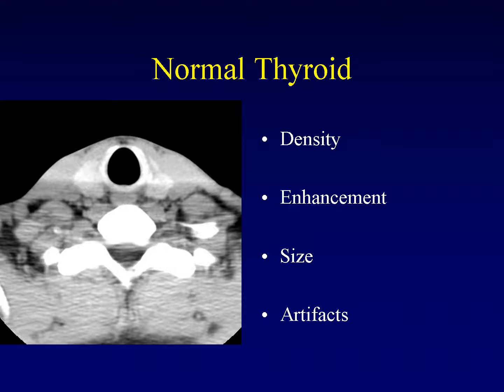The thyroid gland is also very vascular and shows substantial enhancement on post-contrast imaging. The normal thyroid gland is about 20 grams, and the example shown here is about the normal size. This is what we expect to see for a normal thyroid gland.